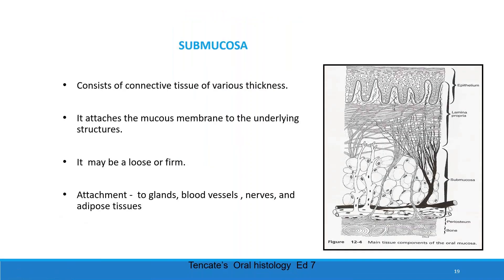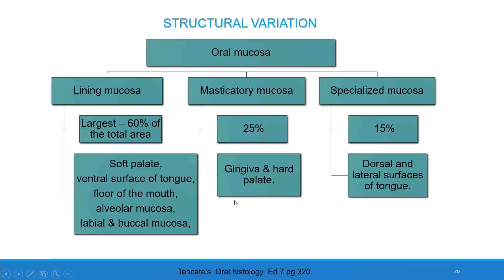Submucosa. It is the most inferior part of the oral epithelium. It consists of connective tissue of various thickness and attaches the mucous membrane to the underlying tissue. It may be loose or firm and is attached to glands, blood vessels, nerves, and adipose tissue.